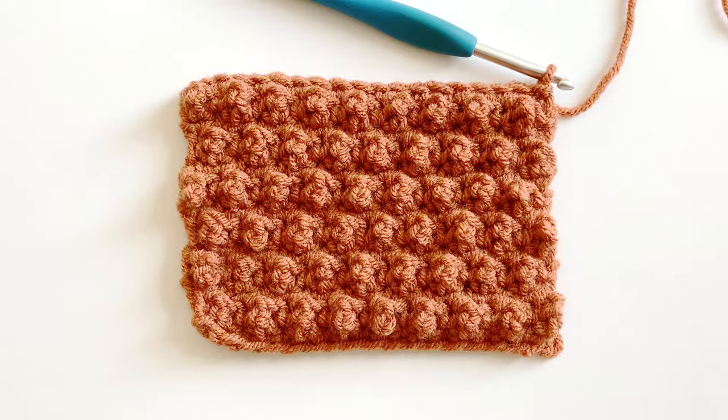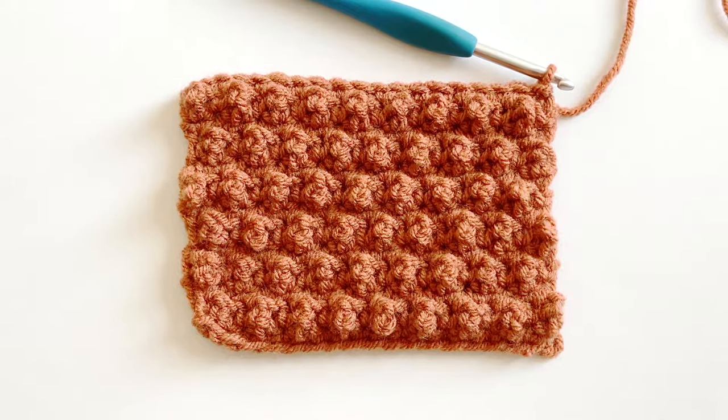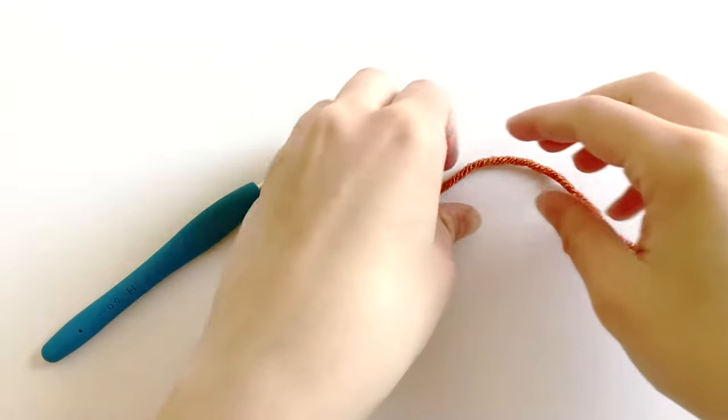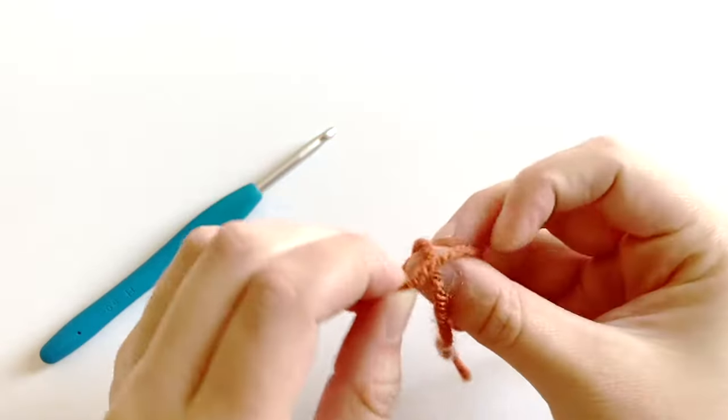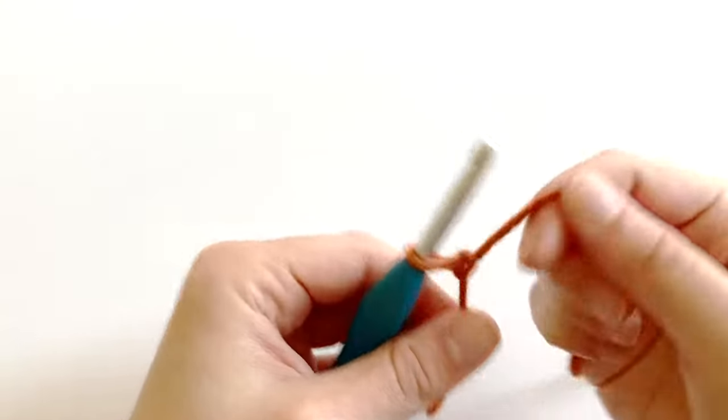Hello everybody, welcome to my channel. Today I'm going to show you how to crochet the cobblestone stitch, so let's get started. To begin, you're going to want to make a slipknot and then chain an even number of chains.